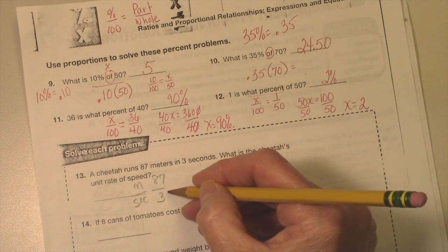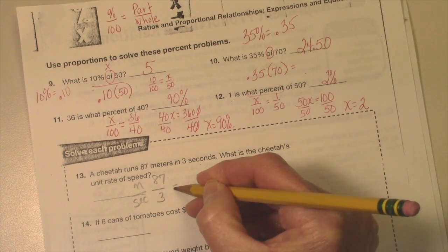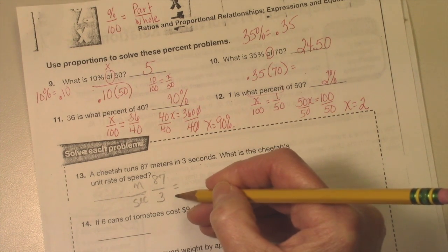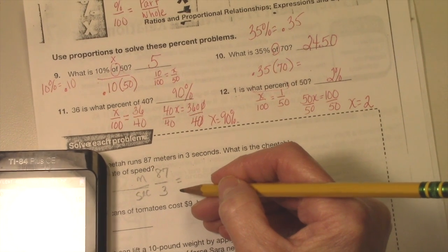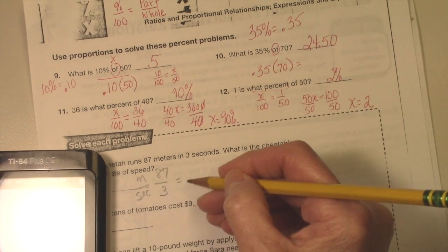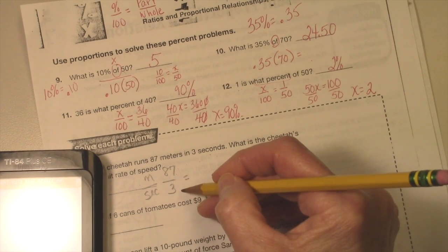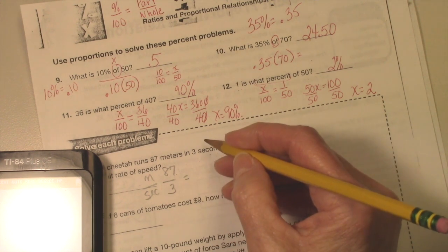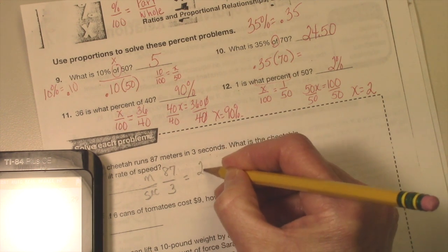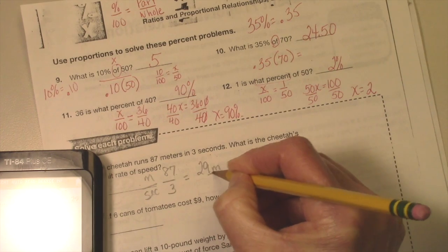Meters per second. So basically 87 divided by 3. I'm going to take my calculator and just do 87 divided by 3, and my answer is 29. This would be 29 meters per second.